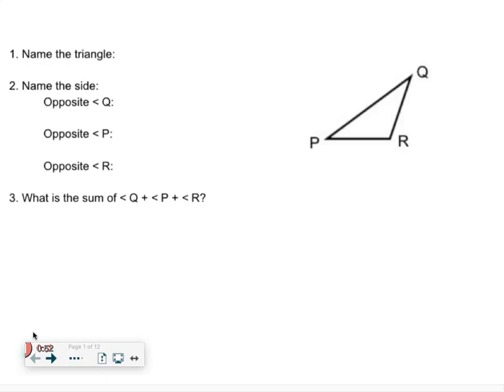It says, number one, name the triangle. I don't even know if we ever fully talked about this, so this is all my fault. But when you name a triangle, we use the little triangle symbol for triangle, and then you use your vertices to name it. So I can pick any order. I'm just going to go triangle PQR. You could have done any order. You could have said triangle RQP, or any variation. It doesn't matter. Just you use three angles to name your triangle.